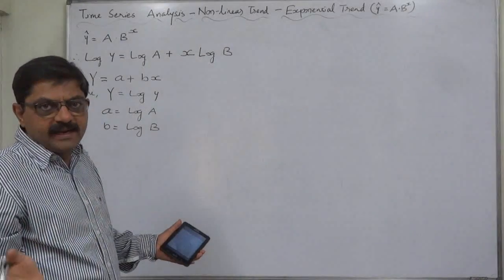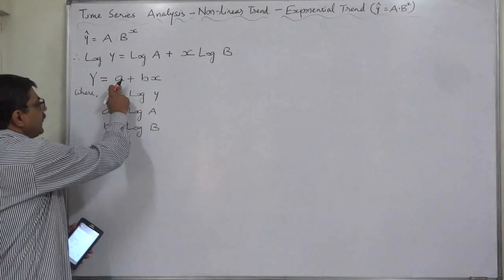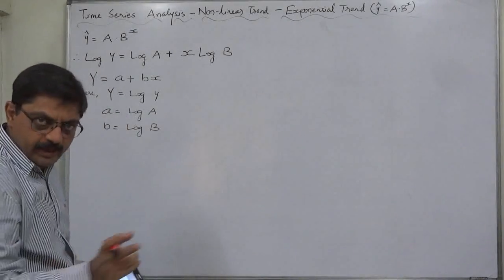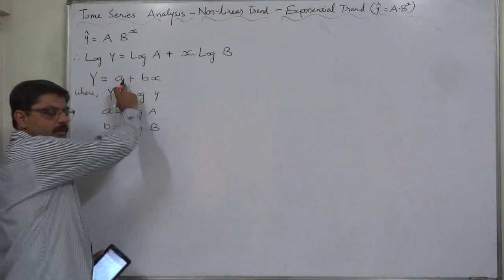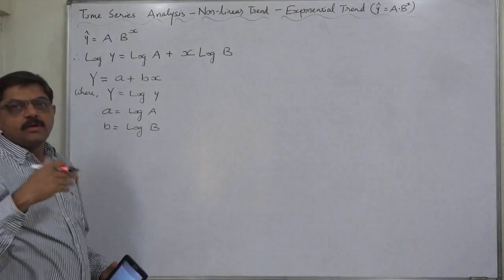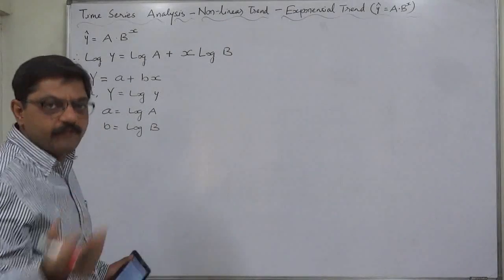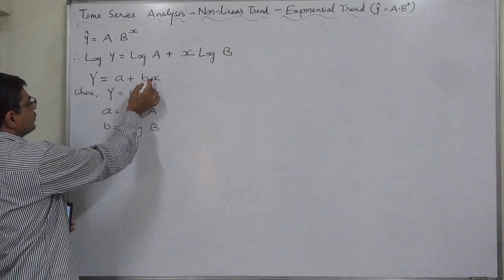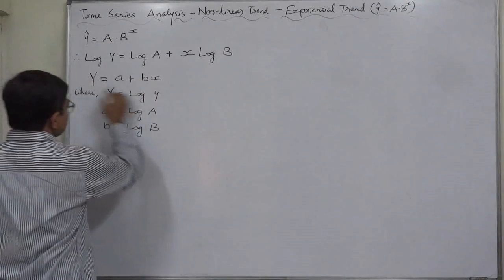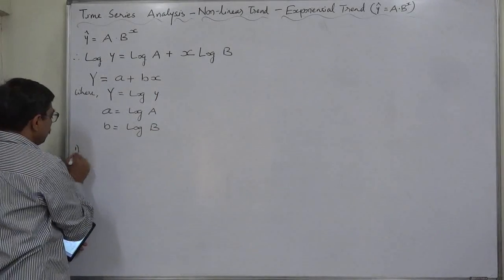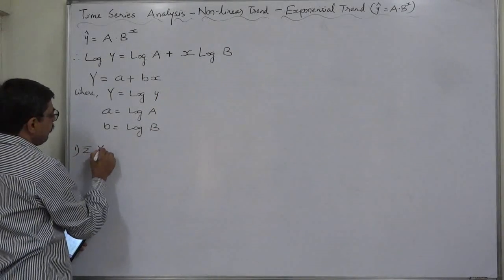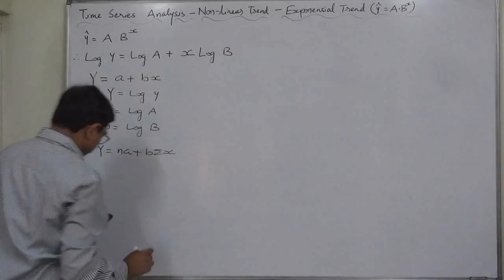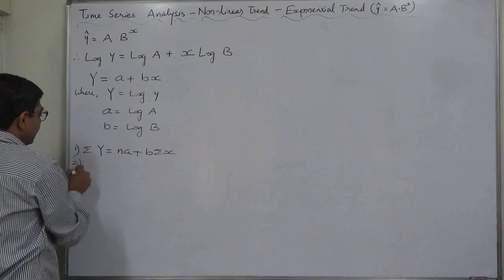The process is similar to finding a linear trend — we need to find values of constants a and b. We use this linear form of the standard equation to get the normal equations. The first normal equation is: sigma Y equals n·a plus b·sigma x.